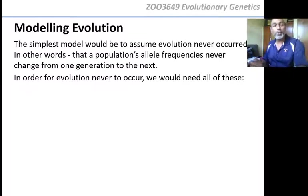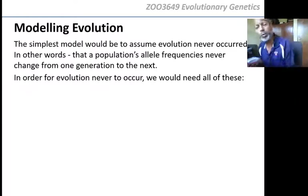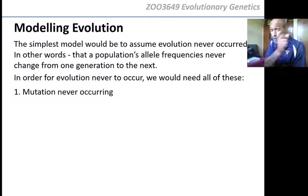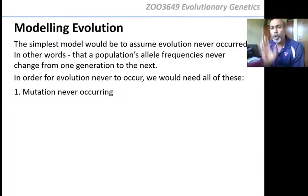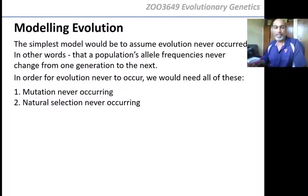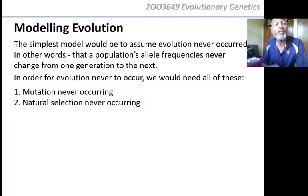In order for evolution never to occur — for allele frequencies to never change from one generation to the next — we will need no new mutations. As soon as you get a mutation, you have another allele, so the frequency of the first allele is going to change. That can't happen. What else cannot happen? Natural selection must never be able to happen, because natural selection will choose the fit allele. In the next generation, you will see a higher frequency of the fit allele, and the unfit allele will not make it. So natural selection also must never occur.